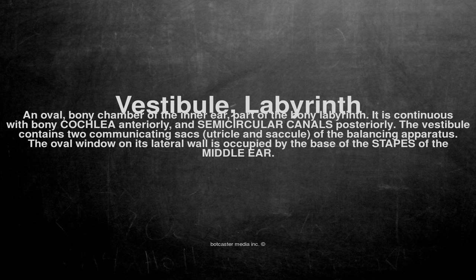The vestibule contains two communicating sacs — the utricle and saccule — of the balancing apparatus. The oval window on its lateral wall is occupied by the base of the stapes of the middle ear.